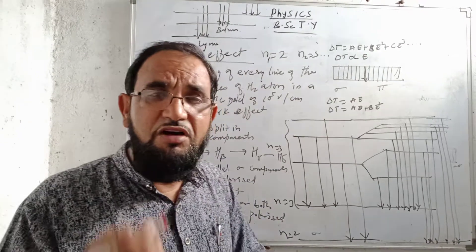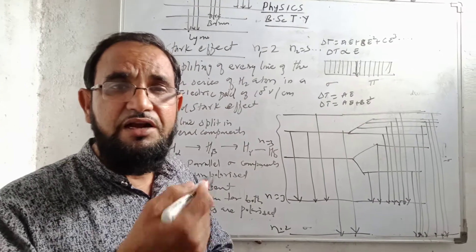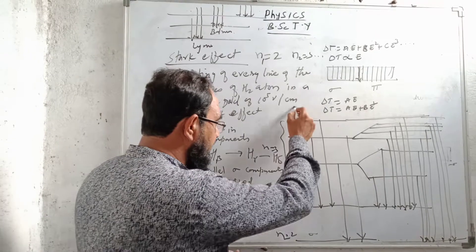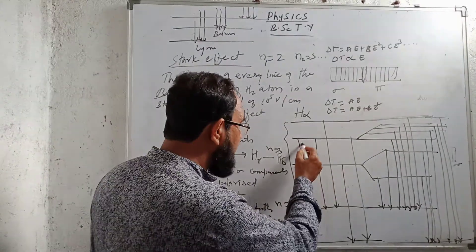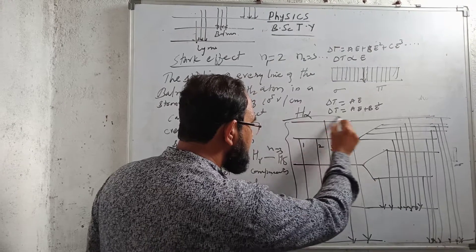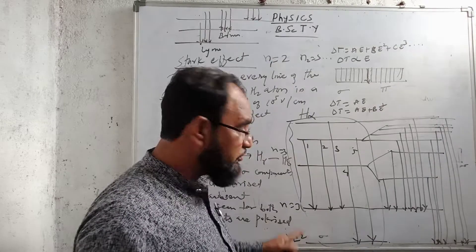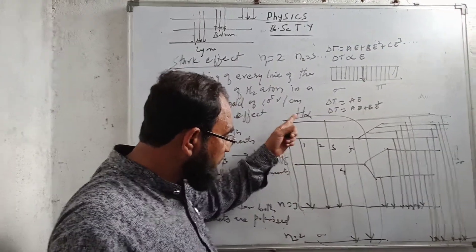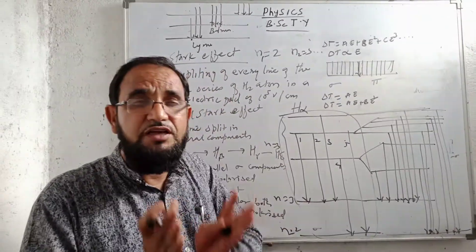Taking the example of the first line of the Balmer series, n1 = 2 and n2 = 3, that is called the H-alpha line. For the H-alpha line, it gets divided into 5 parts: lines 1, 2, 3, 4, and 5. So this spectrum for n1 = 2 and n2 = 3 will produce 5 lines because of the high electric field, as the electron jumps from sub-orbits to lower orbits.